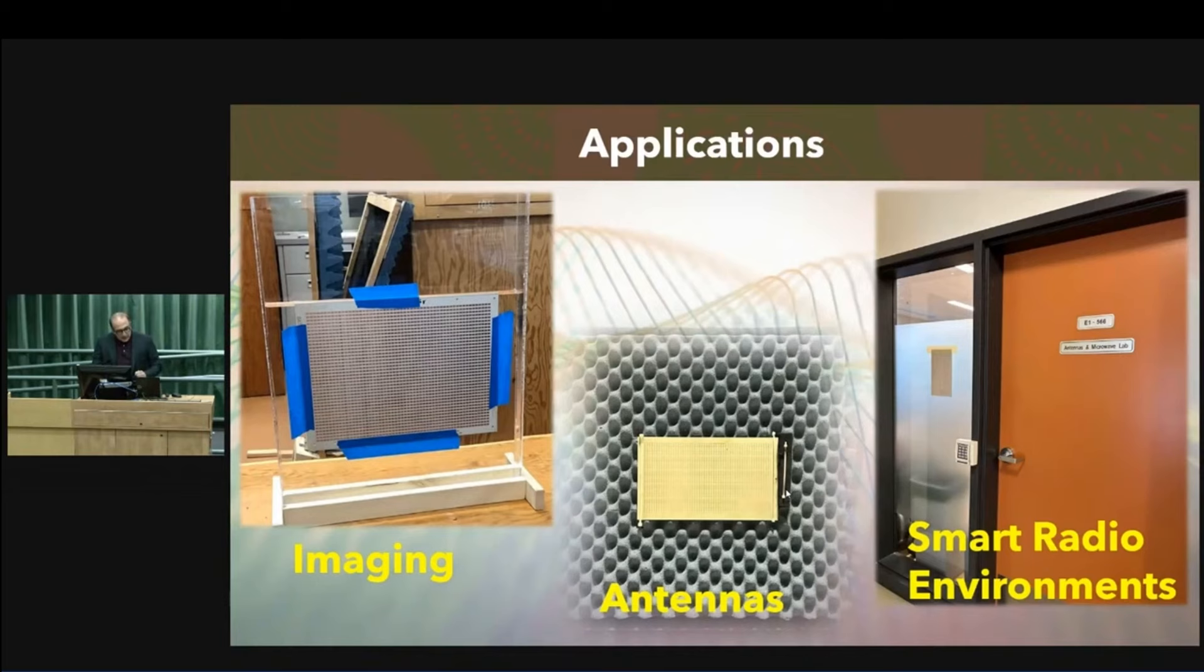Another application is designing antennas. If you want to create a certain radiation pattern, you design a new antenna. But based on this method, you can use your existing antenna and use this metasurface as a transformer. In electrical engineering, probably most of you know about electric transformers that convert voltage to another voltage. This one converts one electromagnetic wave to another one. It's a similar concept.